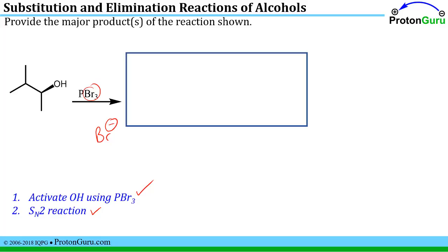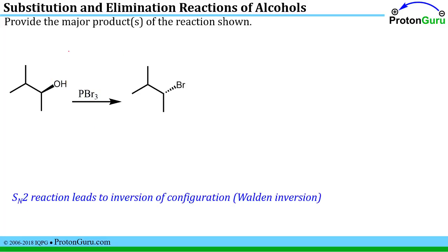The Br minus then undergoes an SN2 type reaction with the alcohol. There's no possibility for rearrangement of a carbocation because the SN2 reaction is a concerted mechanism. So we would expect the net reaction to be replacing this OH group with a bromo group. And the SN2 reaction, remember, leads to inversion of configuration, what we call Walden inversion. So instead of a wedge here we're going to have a hash line with a bromine in place of the OH.